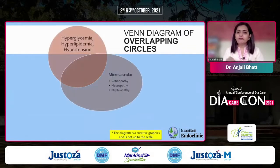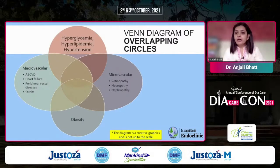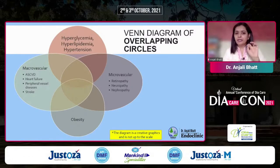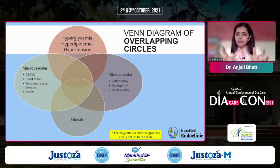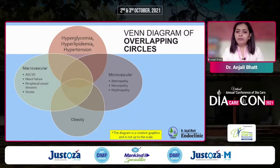Looking at the Venn diagram of overlapping circles — this is not exactly to scale or percentage, but just to illustrate that on one circle we have hyperglycemia, hyperlipidemia, hypertension, obesity, microvascular complications, and macrovascular complications. These circles are overlapping — they are not inclusive of each other, not the same as each other, and not exclusive of each other. They are overlapping.